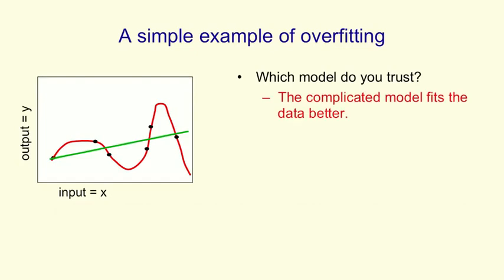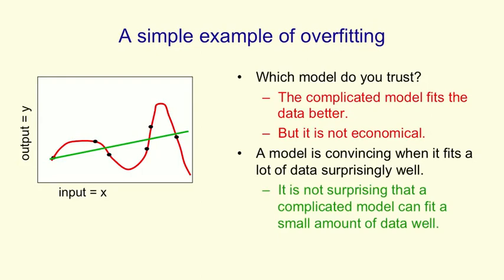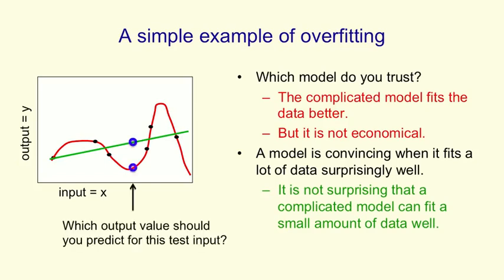The complicated model certainly fits the data much better, but it's not economical. For a model to be convincing, what you want it to do is be a simple model that explains a lot of data surprisingly well. And the polynomial doesn't do that. In fact, it explains these six data points, but it's got six degrees of freedom, so wherever these data points were, it would be able to explain them. We're not surprised that a model this complicated can fit that data very well, and it doesn't convince us that this is a good model. So if you look at the arrow, which output value do you predict for this input value?